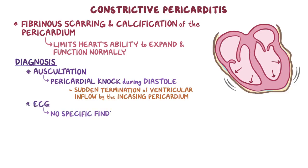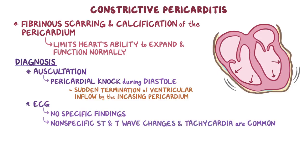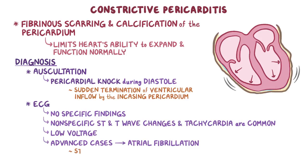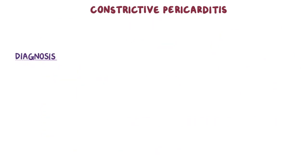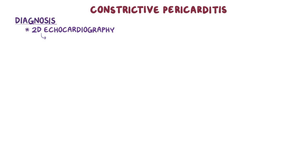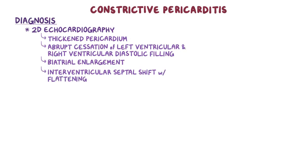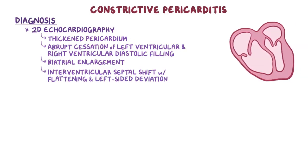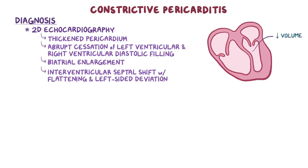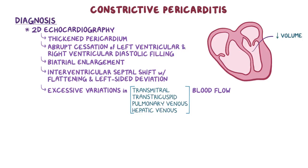There are no specific electrocardiographic findings in constrictive pericarditis. Non-specific ST and T wave changes and tachycardia are common, and low voltage may also sometimes be present. Advanced cases may also develop atrial fibrillation due to stretching of the atrial walls from increased atrial pressures. Two-dimensional echocardiography may show a thickened pericardium, abrupt cessation of left ventricular and right ventricular diastolic filling, biatrial enlargement, and an interventricular septal shift with flattening and left-sided deviation of the interventricular septum, causing a decreased volume in the left ventricle. There are also excessive variations in transmitral, transtricuspid, pulmonary venous, and hepatic venous blood flow due to respirations.